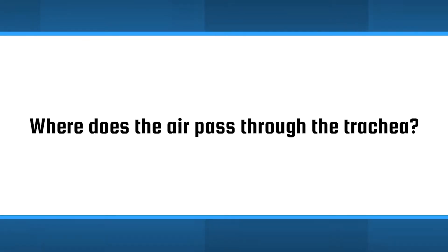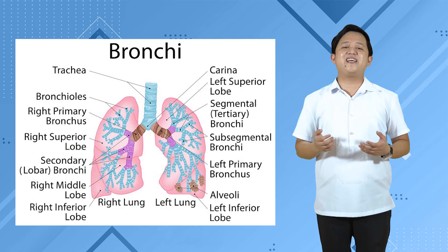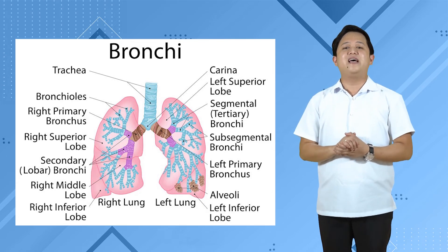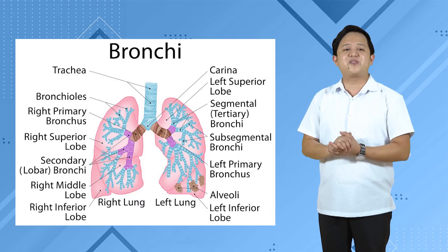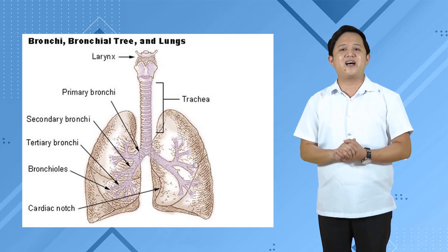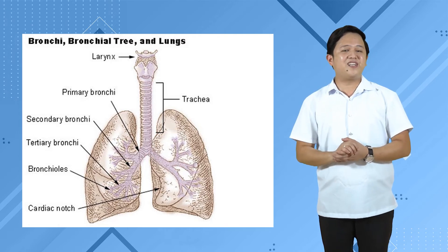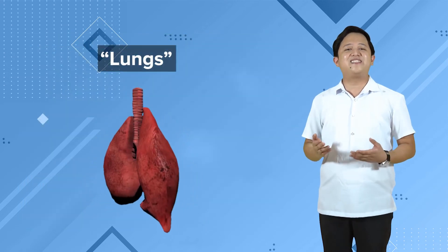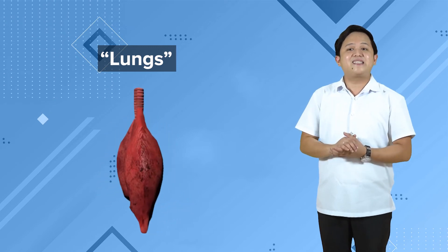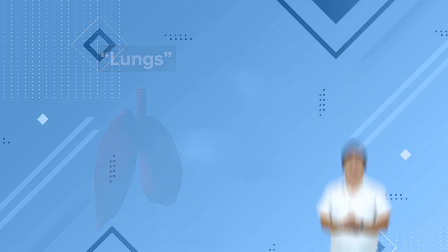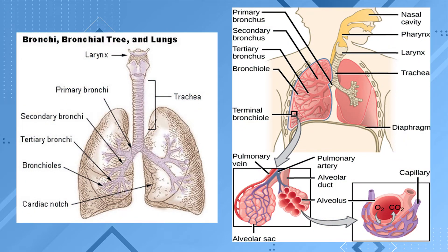From the trachea, air passes into the bronchi, which are connected to the left and right lungs. The bronchi subdivide into smaller branches called bronchioles. Together, bronchi and bronchioles are called the bronchial tree. The lungs are the largest organs of the respiratory system, where gas exchange takes place. Each bronchus branches into bronchioles, which end in individual air sacs called alveoli.